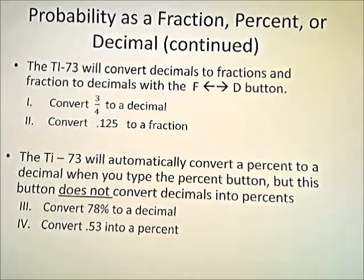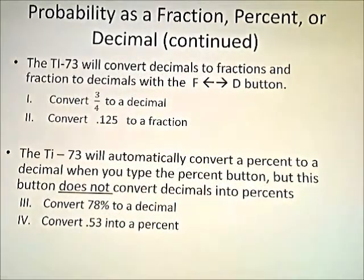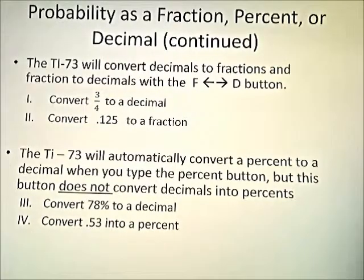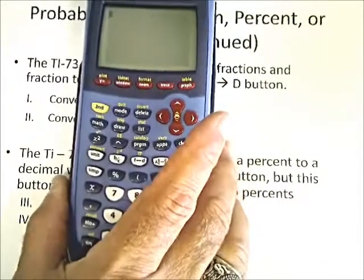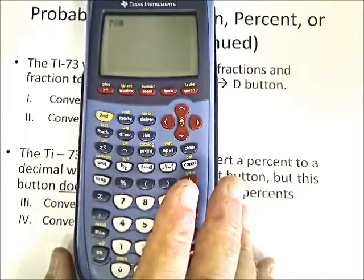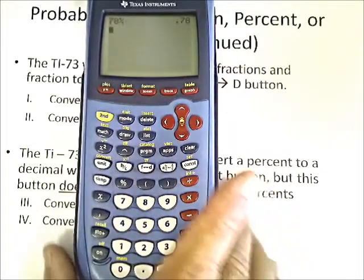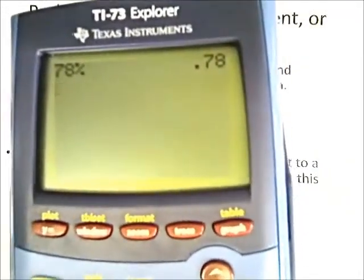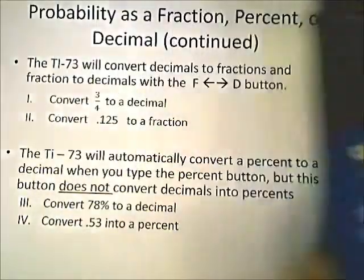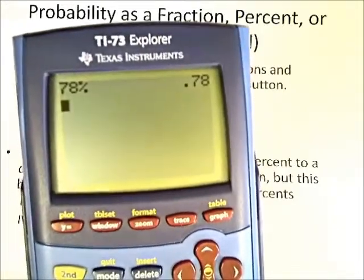Number three, we're looking at converting a percentage to a decimal using the percent button — but note this button does not convert decimals into percent. We'll do it together. We're going to type in the number 78, then hit the percentage button and press enter. Our answer is 78 hundredths, so 78 percent is 0.78, which we know from discussing how to write percentages numerically with decimals.